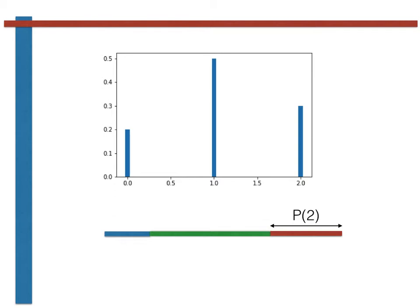We can now generate our uniform random variable between 0 and 1 again. If the value that we generate when we generate this random variable is in the blue segment of the line, we set the multinomial random variable equal to 0. If instead it is in the green segment of the line, then we set the multinomial random variable equal to 1.